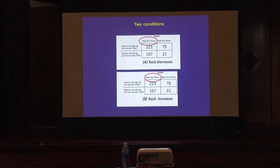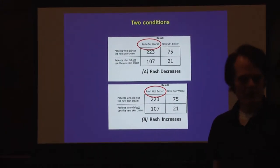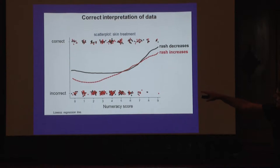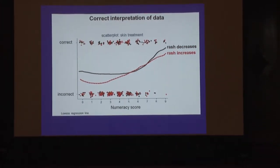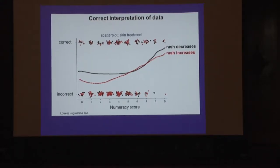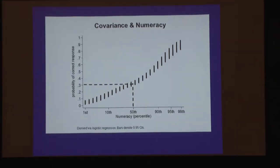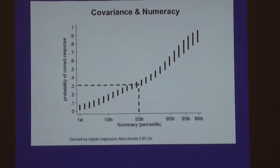We also changed the heading, so half the subjects see information which, if properly interpreted, would suggest the skin cream is working, and half see information which suggests it's not. Looking at the raw data: a locally weighted regression line gives a running tally of the proportion of people getting it right relative to their score on the nine-item numeracy test. People who are more numerate are more likely to get it right. At the 50th percentile in numeracy, there's only about a 30% likelihood you'll get it right — meaning 70% of people in the general population get it wrong.